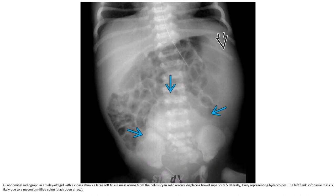AP radiograph in a one-day-old with cloaca malformation shows a large soft tissue mass arising from the pelvis and perineal space, separate from a large vulvar mass, likely representing hydrocolpos. The left flank soft tissue mass is likely due to meconium-filled colon.